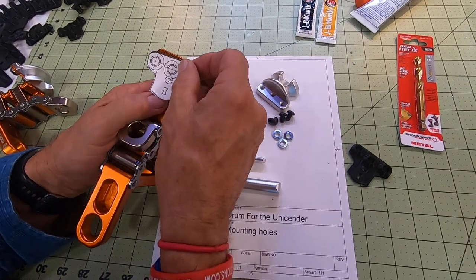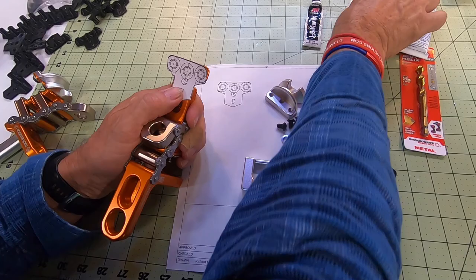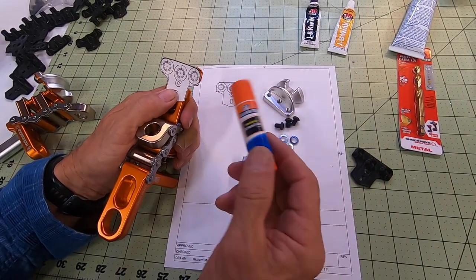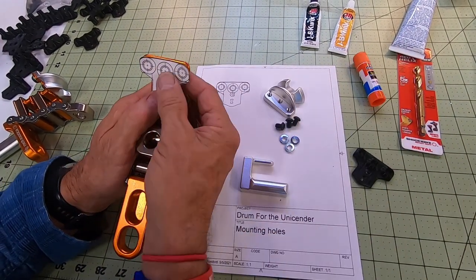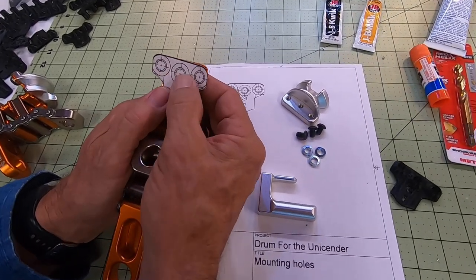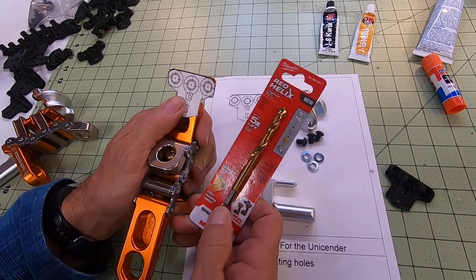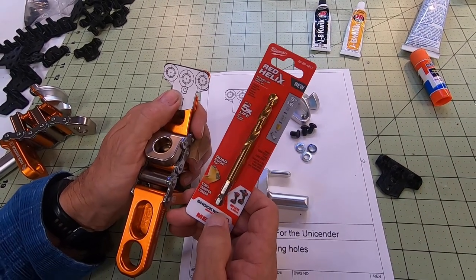You can cut out your stencil and then use some just paper glue or whatever and glue that stencil on, and then use those marks to make your holes. Your hole should be made with a 5/16 drill bit.